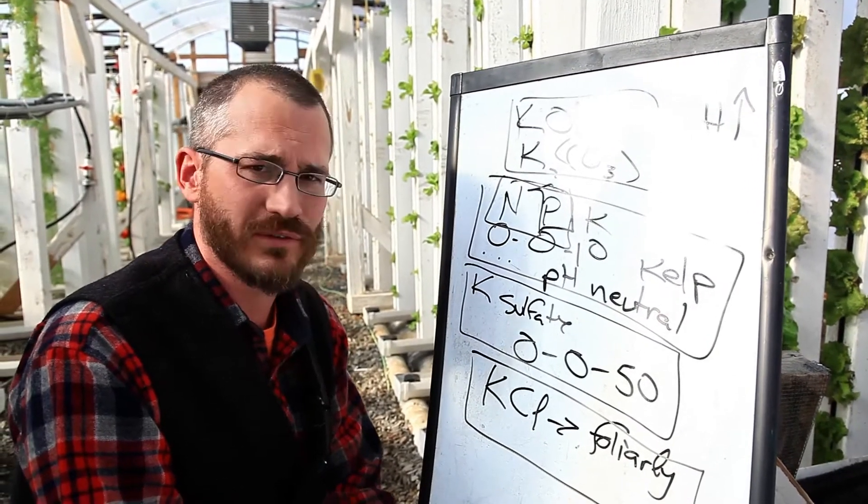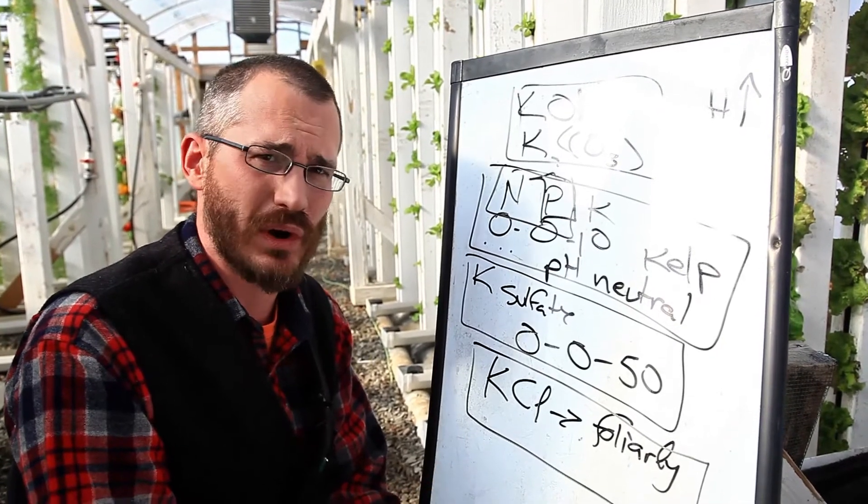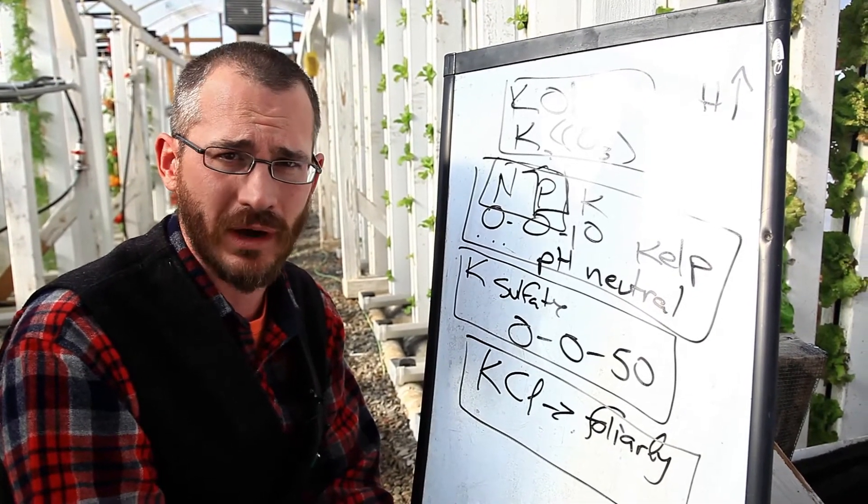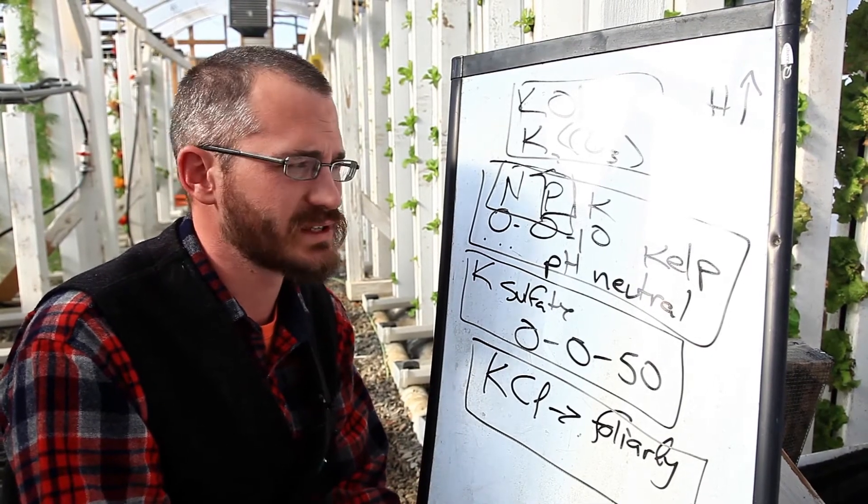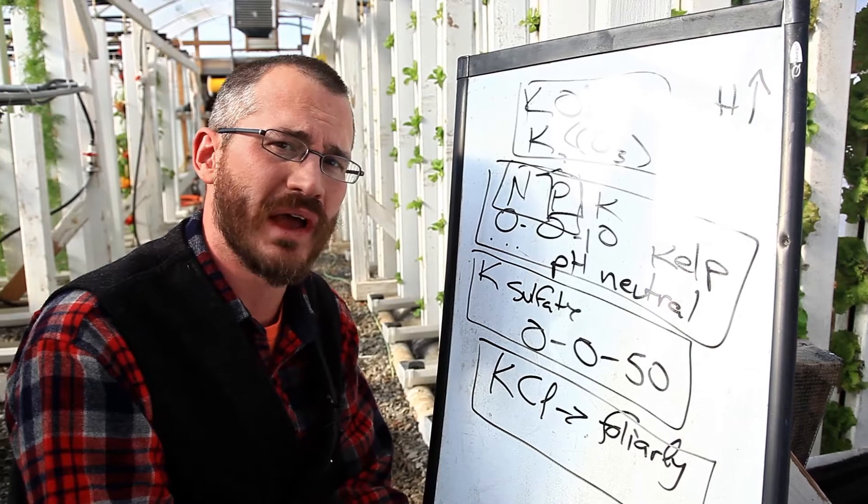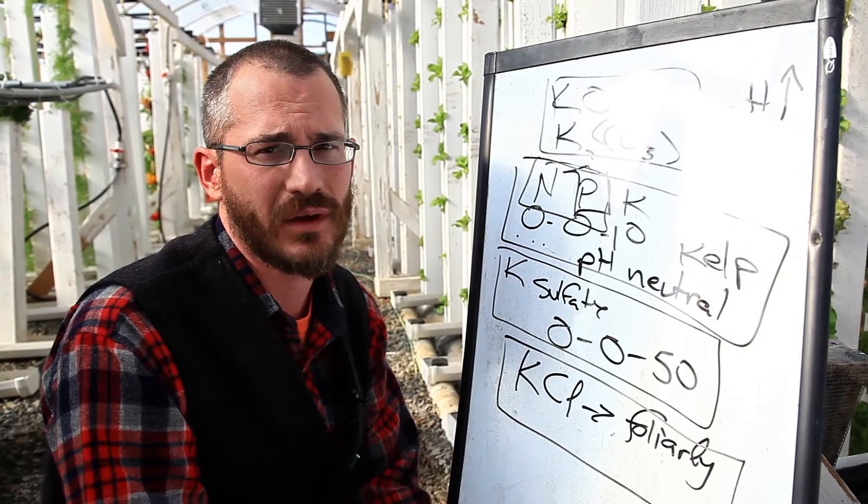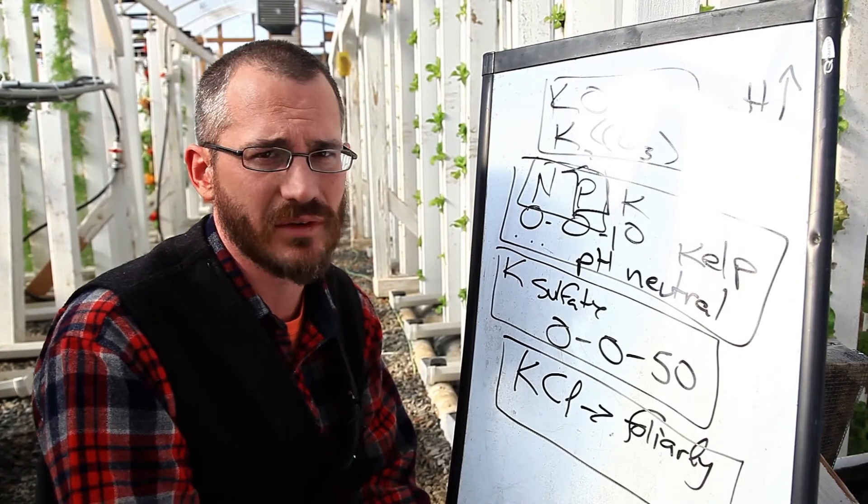The big thing with foliar applications of anything is you can burn your plants if you apply it at the wrong rate. So it's always important to know what rates you're applying, what substances you're using and make sure that you're applying them at appropriate rates to address the need of your system.